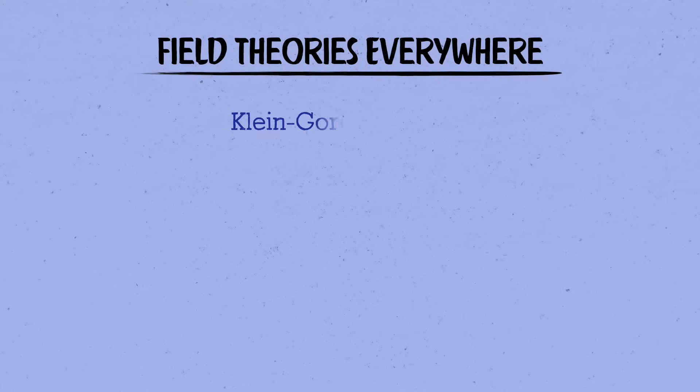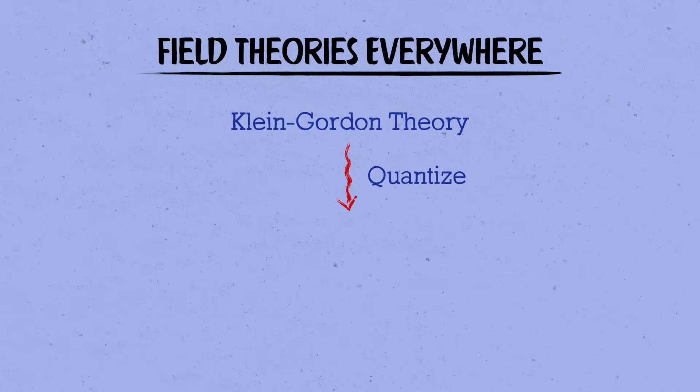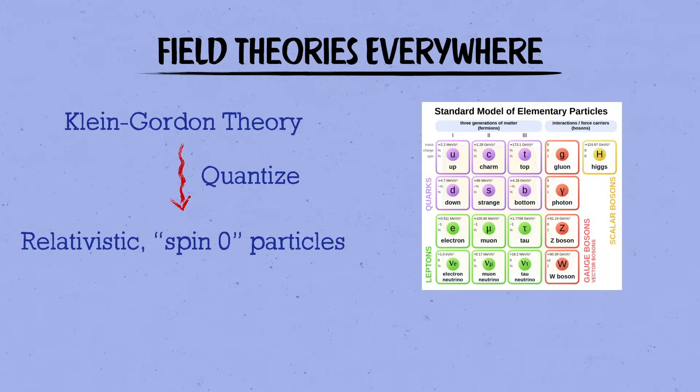That was a very rapid tour of the simplest example of a relativistic field theory, and it's the best place to start learning field theory. Like I mentioned, in quantum field theory, the counterpart of this Klein-Gordon system describes the physics of spin zero particles, where the spin refers to how the particles and fields transform under the symmetries of space-time. But that would take at least a whole other video to explain. Most of the elementary particles of nature are not spin zero, however. The only spin zero particle in the standard model of particle physics is the Higgs boson, which was finally discovered at the Large Hadron Collider in 2012, after its theoretical prediction almost 50 years earlier.